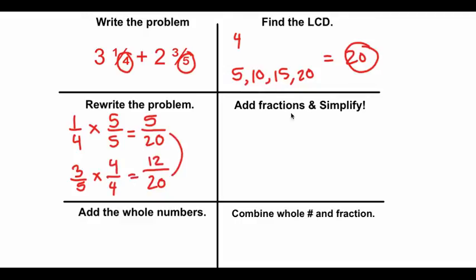Let's add and simplify them over here. So 5/20 plus 12/20. Denominator always stays the same. And our numerator 5 plus 12 is 17. This is already simplified. We can't reduce it. We can't change it to a mixed number. So that's done.